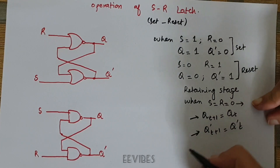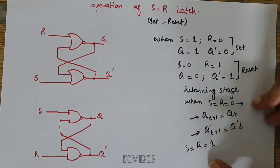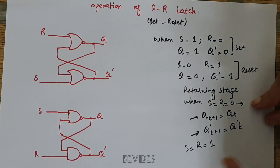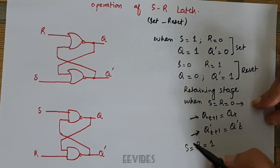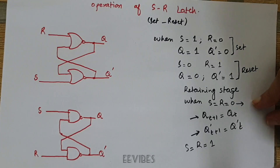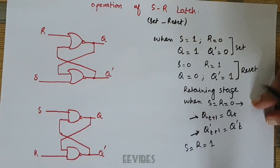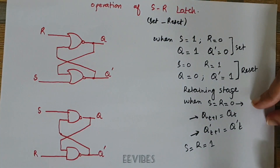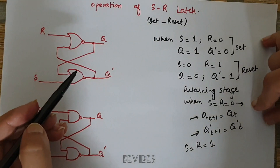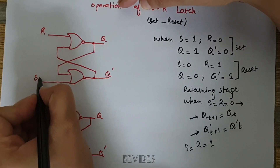There is another stage defined for S and R both equal to 1. This stage is called the forbidden state and is avoided because it sends the SR latch into a metastable state, where both outputs are not produced as the complement of each other. While defining the operation, I will show you how this stage is avoided.